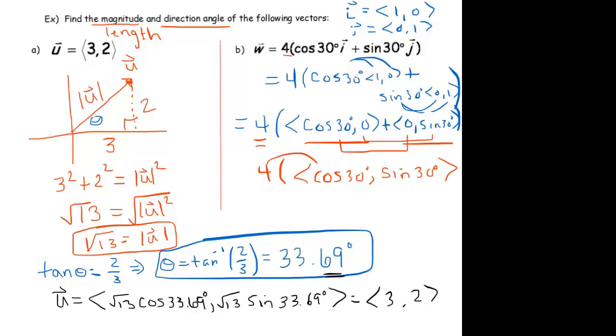And now I can distribute the 4 to both of these components. And you get 4 cosine of 30 degrees, comma, 4 sine of 30 degrees. And now it's very clear that, because of the form of this, our magnitude is 4. The magnitude of W is equal to 4. And the direction angle is 30 degrees.